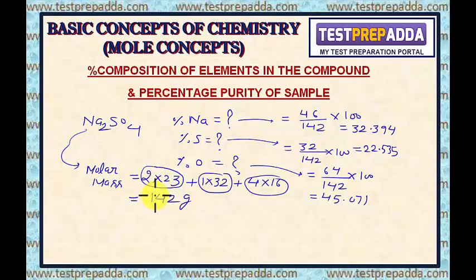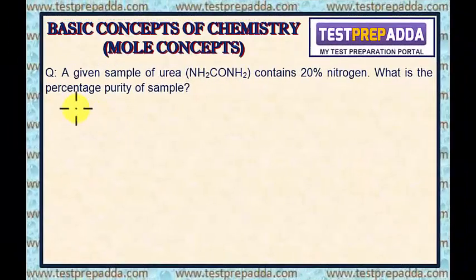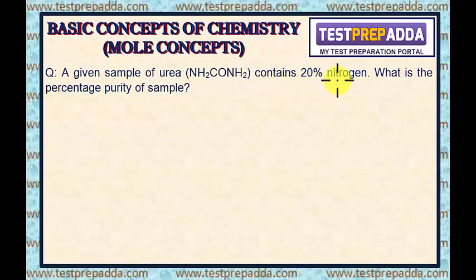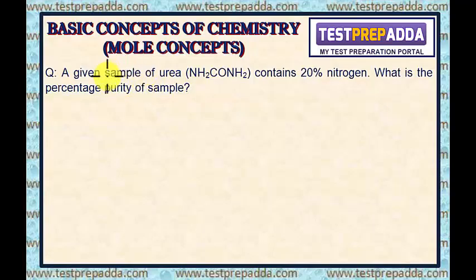Now, to understand the concept of purity, I will take a few questions. The question says: a given sample of urea — the formula of urea is given — contains 20% nitrogen. What is the percentage purity of the sample? To understand whether the sample is 100% pure or not, we have to find the percentage of nitrogen in the 100% pure sample.